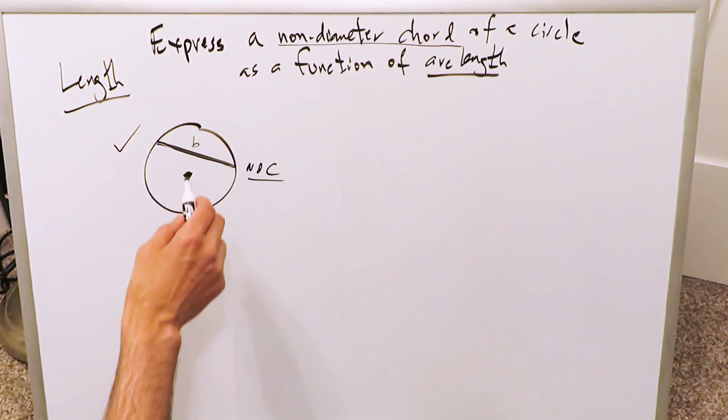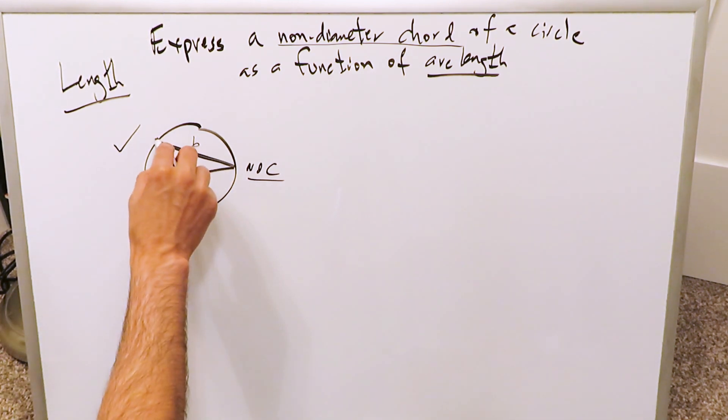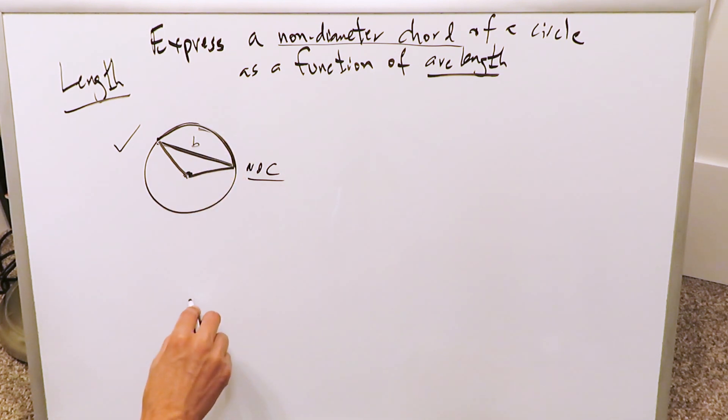The best way you can do it is by generating a sector. You see how by connecting here, we've now generated what is a sector. You blow it up. This is what we're looking at, a sector, but we also have this non-diameter chord B.